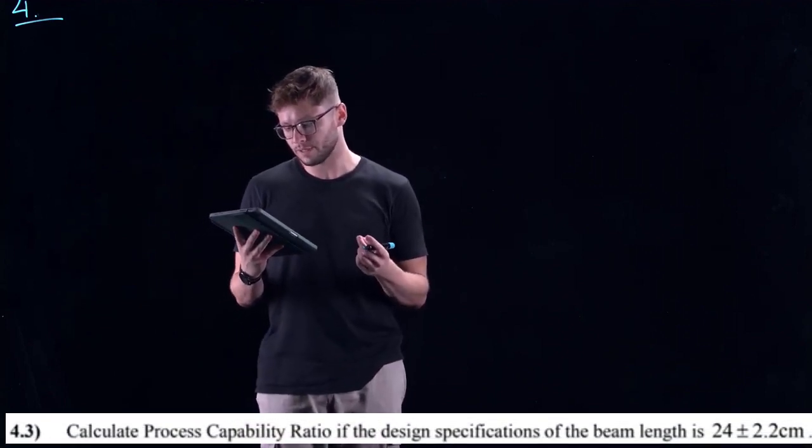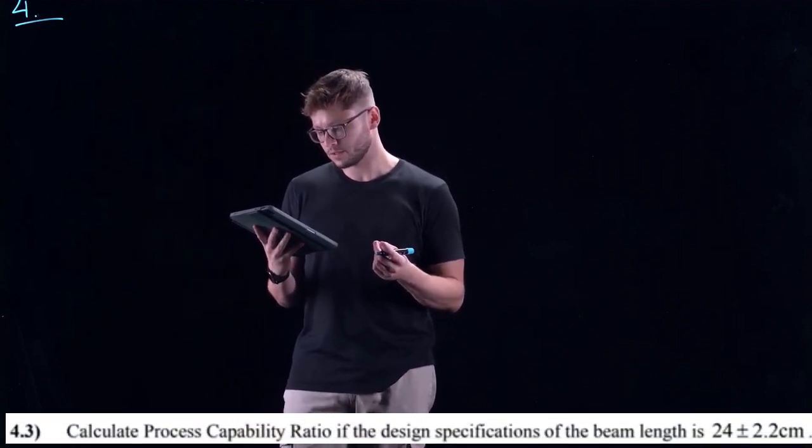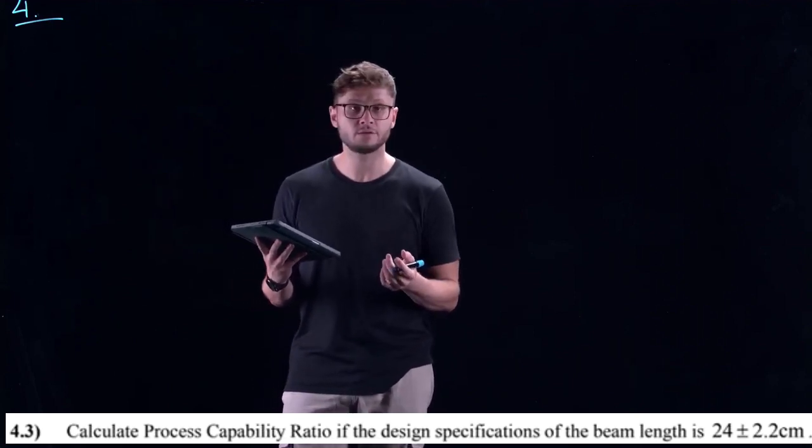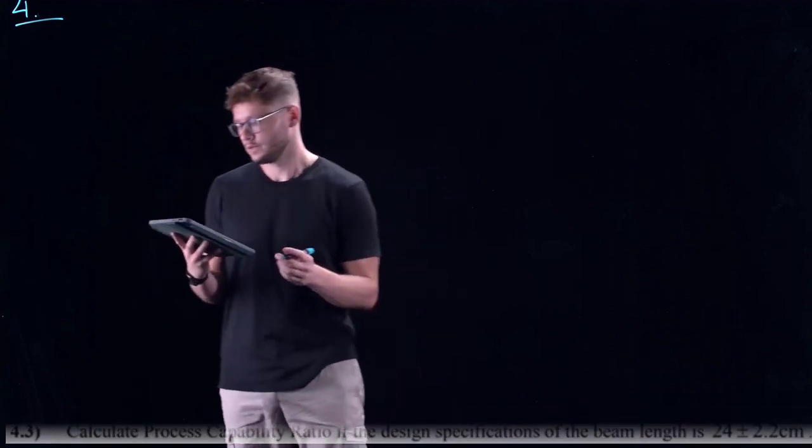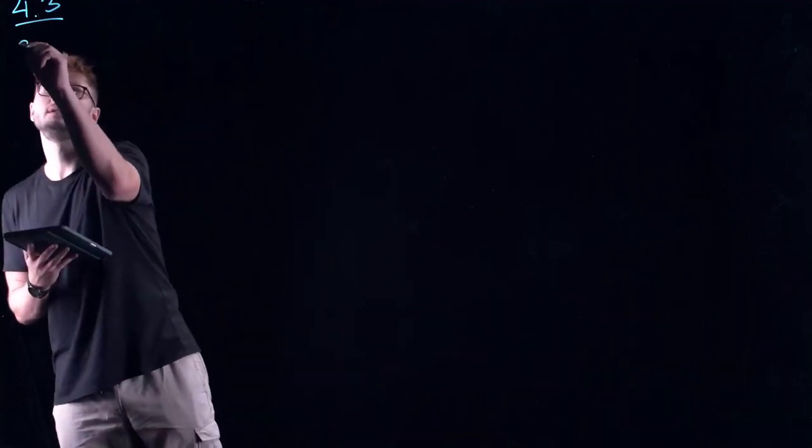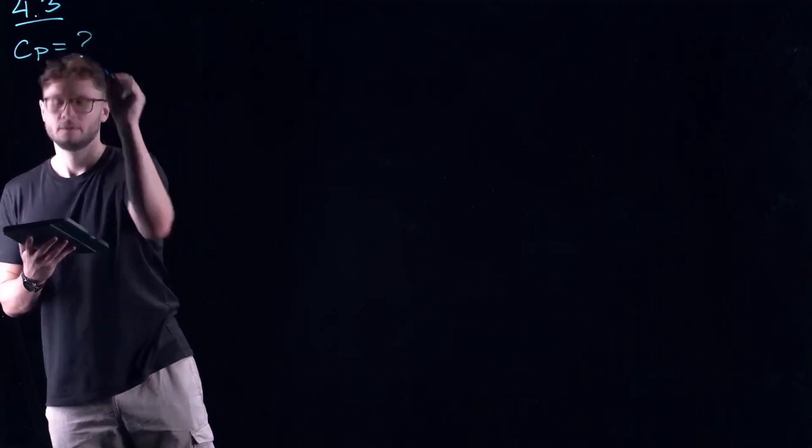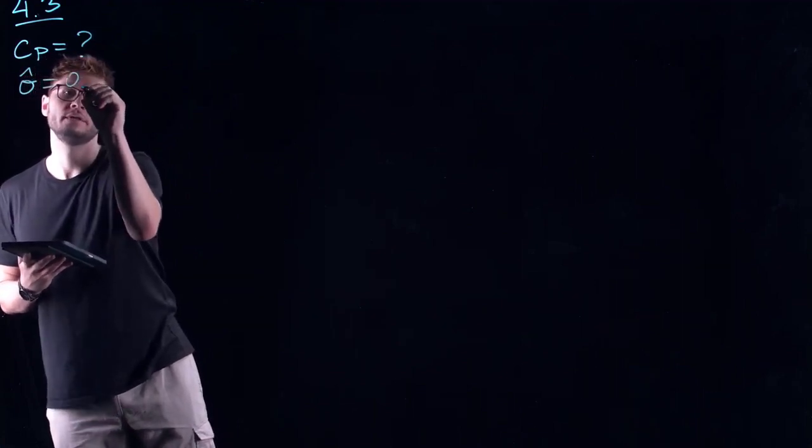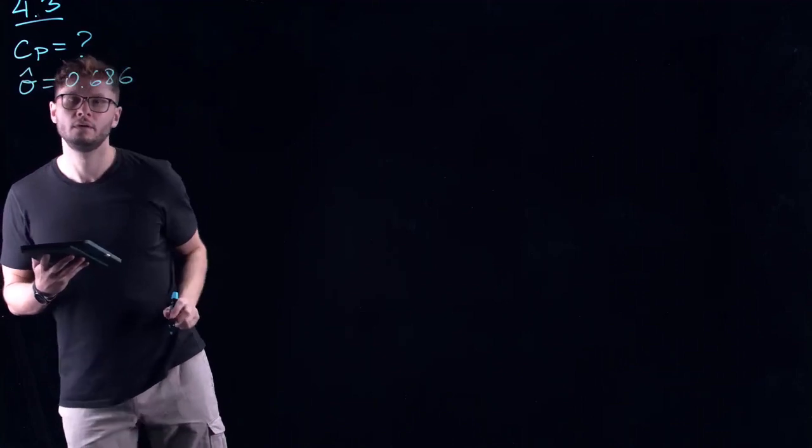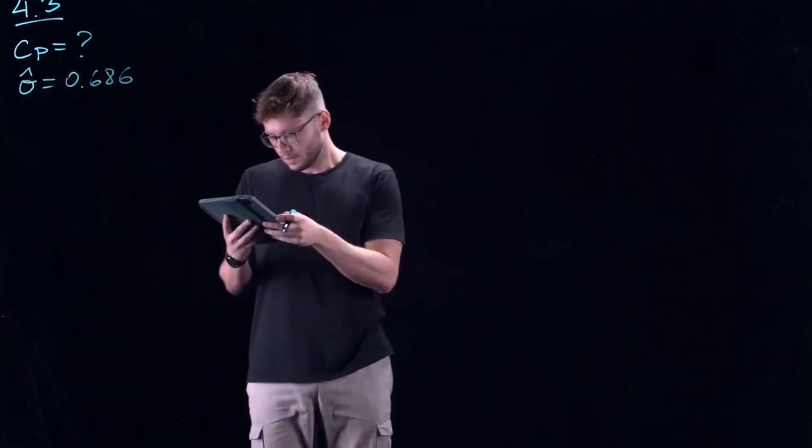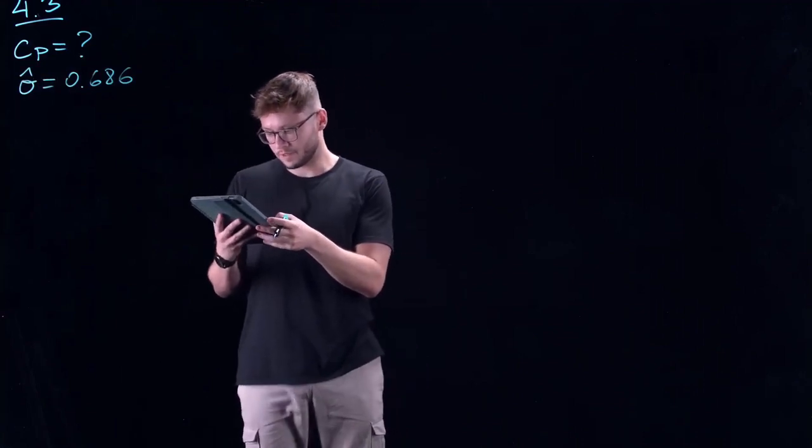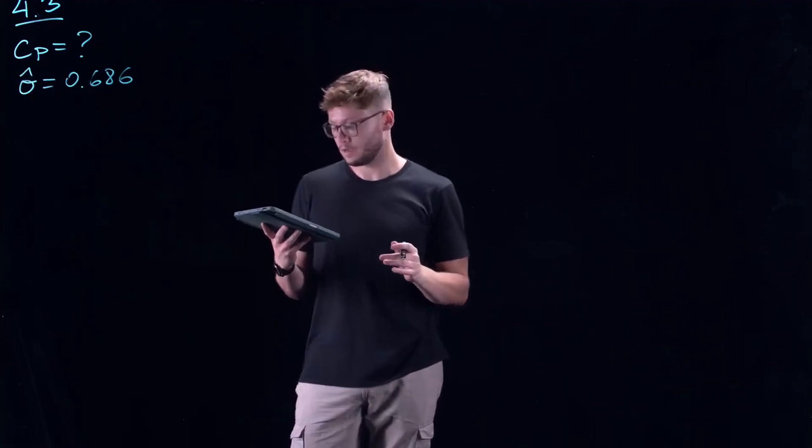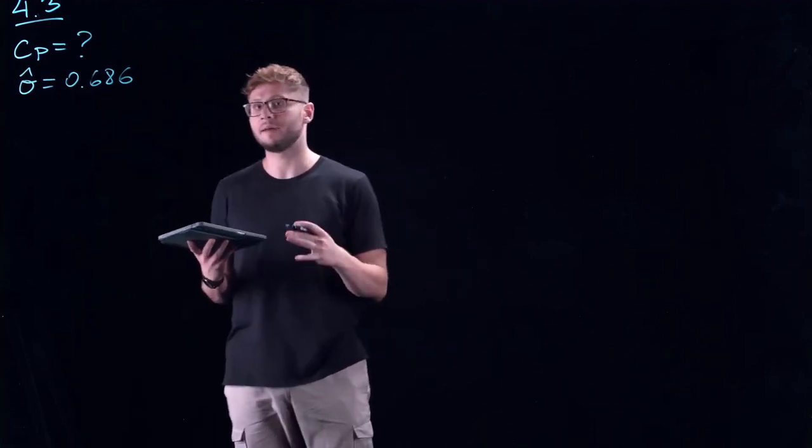For question 4.3, they're asking us to calculate the process capability ratio if the design specifications of the beam's length is 24 plus minus 2.2 centimeters. We have to use the upper and lower specification limits. These are not the control limits. These are the specification limits, these are dimensions. Typically in engineering, when you're building something, you're given tolerances because if you were asked to make every single one of a hundred thousand units to an exact size, that would be extremely costly to hit that exact mark every time.